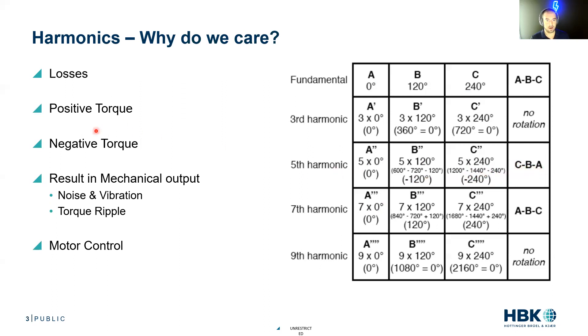This fifth harmonic causes negative torque, which causes losses. The seventh harmonic has positive torque, but maybe it's not in phase, maybe it's causing torque ripple. This is some cool stuff.